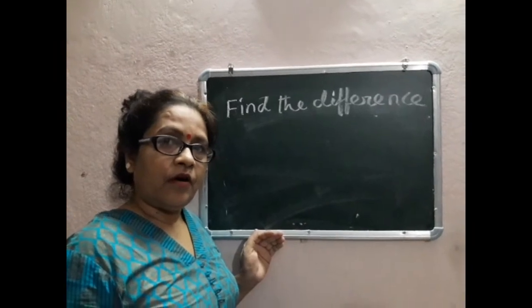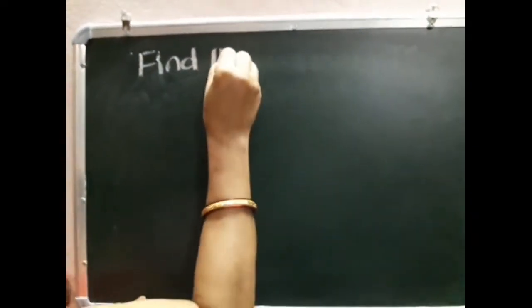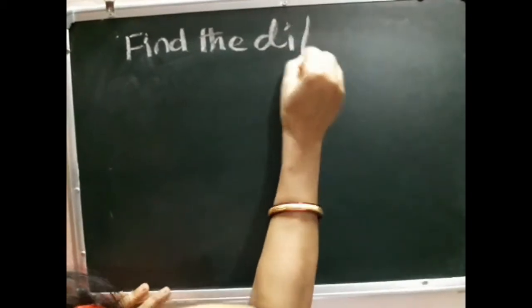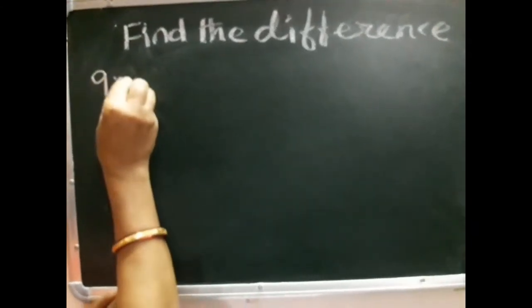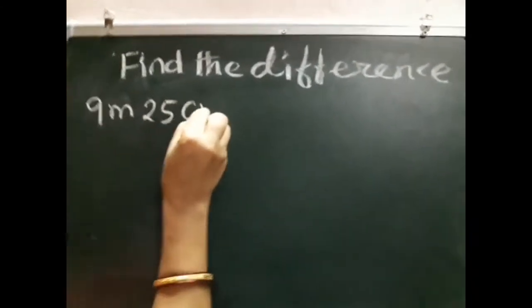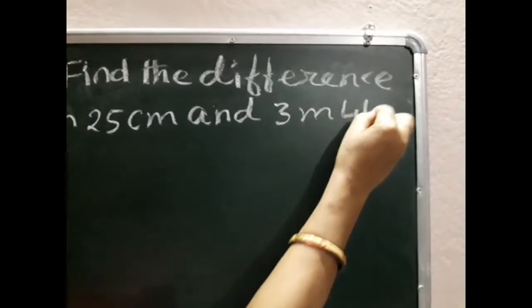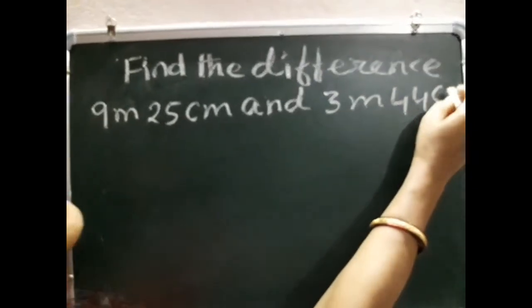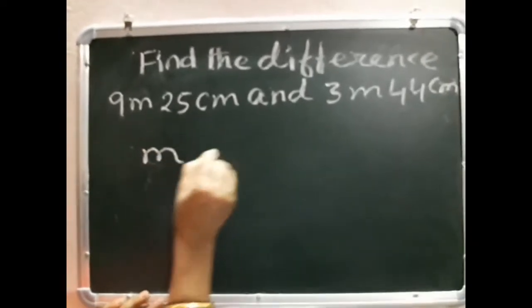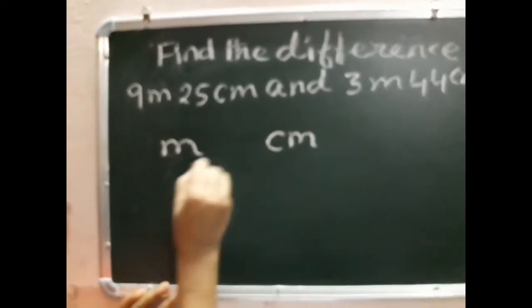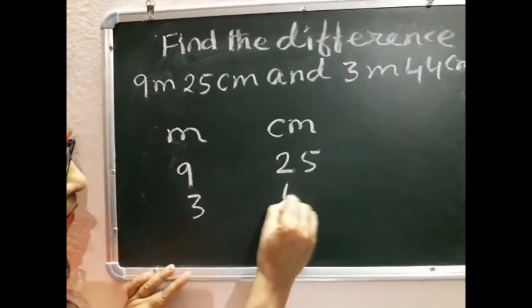Find the difference: 9 meter 25 centimeter and 3 meter 44 centimeter. At first we arrange the numbers - meter, centimeter: 9 meters 25 centimeters, 3 meters 44 centimeters.